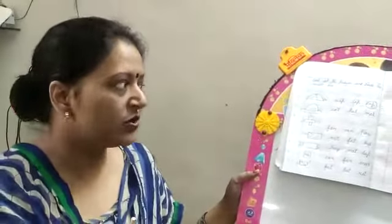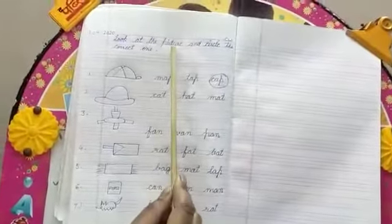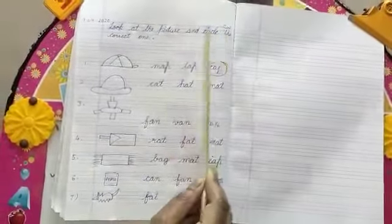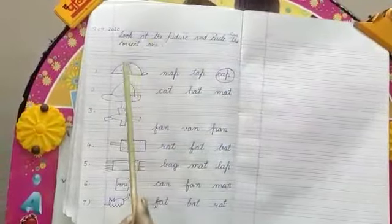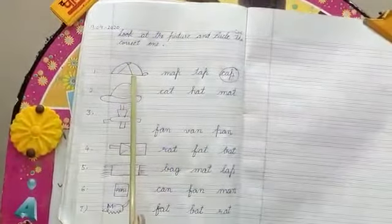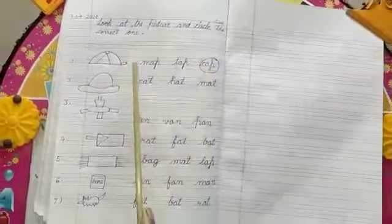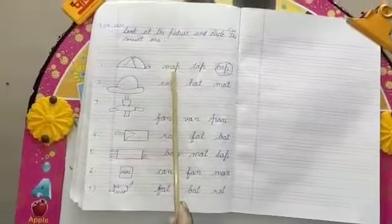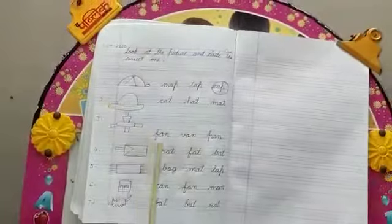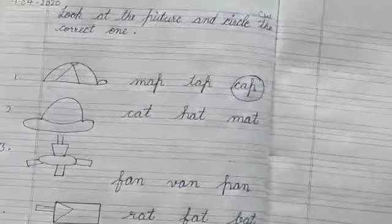Now we will do the concept. The concept is: look at the picture and circle the correct one. I have drawn the picture and three words are there. Only one word is correct and the student will circle the right one.